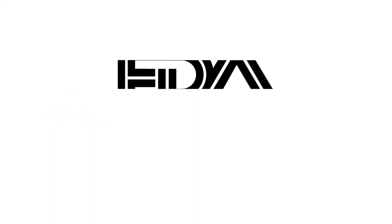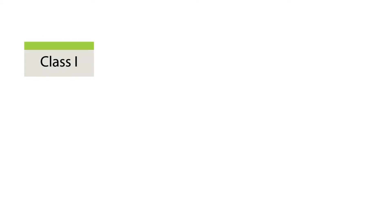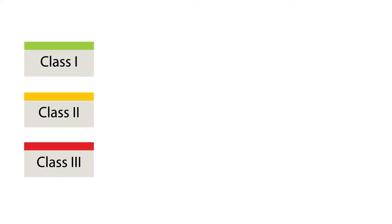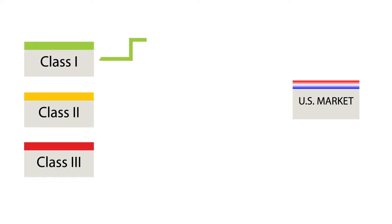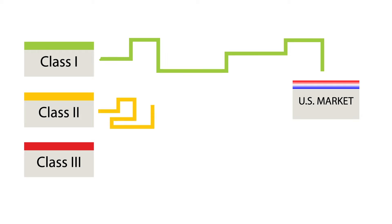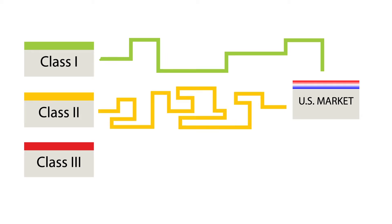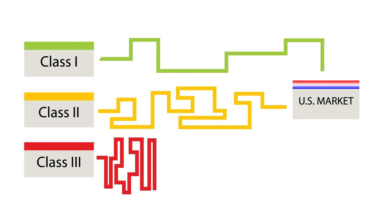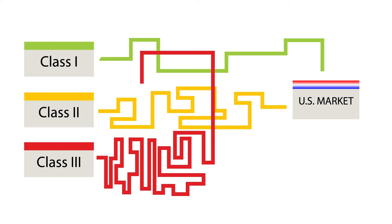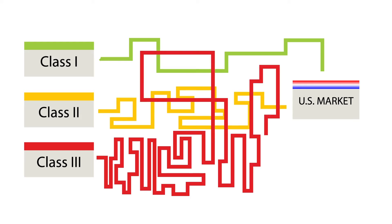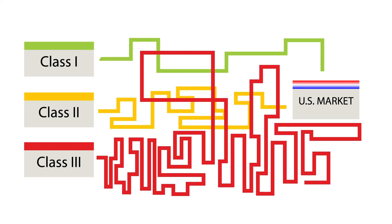The U.S. FDA has three medical device classes: Class 1, 2, and 3. The higher the class, the more stringent the regulations. Device classification determines the regulatory routes the manufacturer must follow to obtain clearance or approval to distribute the device in the U.S.